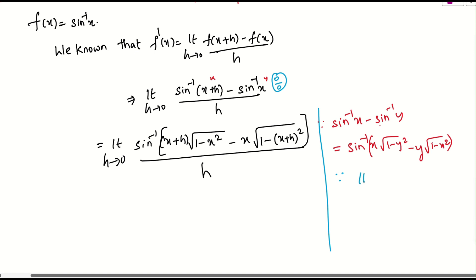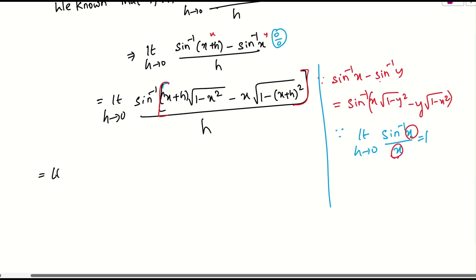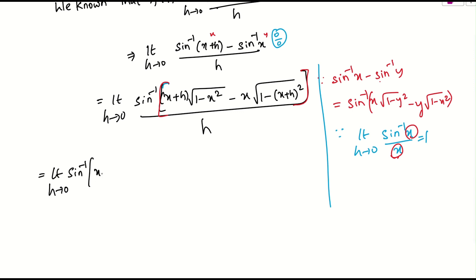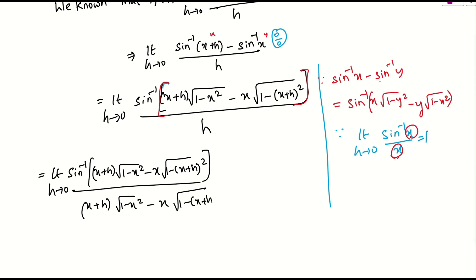We know that limit h tends to 0 of sine inverse of x by x equals 1. To apply this formula, the same expression should appear in both numerator and denominator. So I will multiply and divide by: x plus h into root of 1 minus x square minus x into root of 1 minus x plus h whole square. With this, the sine inverse part becomes 1, and we are left with limit h tends to 0 of that expression divided by h.